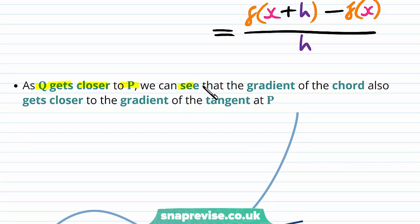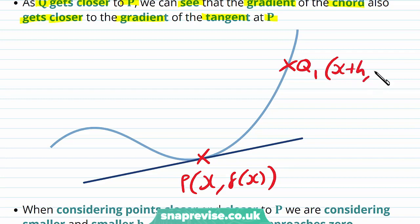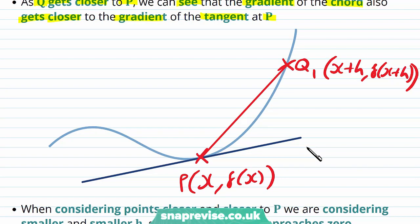As Q gets closer to P, we see that the gradient of the chord also gets closer to the gradient of the tangent at P. Here we have point P at (x, f(x)) with the tangent drawn. Letting Q₁ be (x+h, f(x+h)), we draw the chord between P and Q₁, then bring Q₁ slightly closer to P to Q₂, and even closer to Q₃. As it goes from Q₁ to Q₂ to Q₃, bringing Q closer and closer to P, the chord becomes closer and closer to being the tangent line.